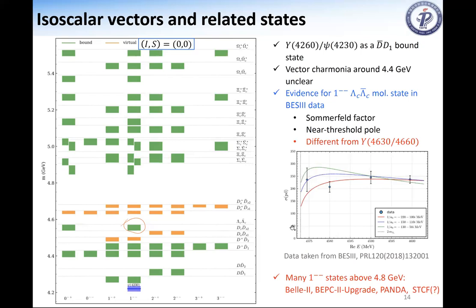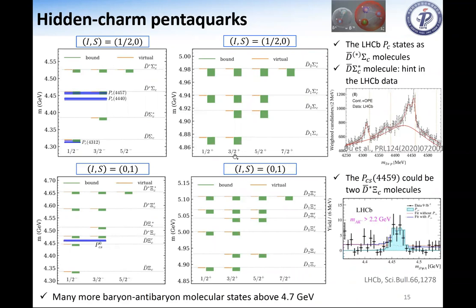Many of these 1-- states around 4.8 GeV can be studied at Belle 2 and also at BESIII upgrade. Panda can study more quantum numbers. There are also Super Tau-charm factory proposals under discussion. For states with baryon number — that means pentaquark or molecular-type pentaquarks — we also predict quite some number. The three P_c states P_c(4312), P_c(4440), P_c(4457) correspond to these three predicted states. There is also a narrow one around 4380, as we emphasized two years ago.